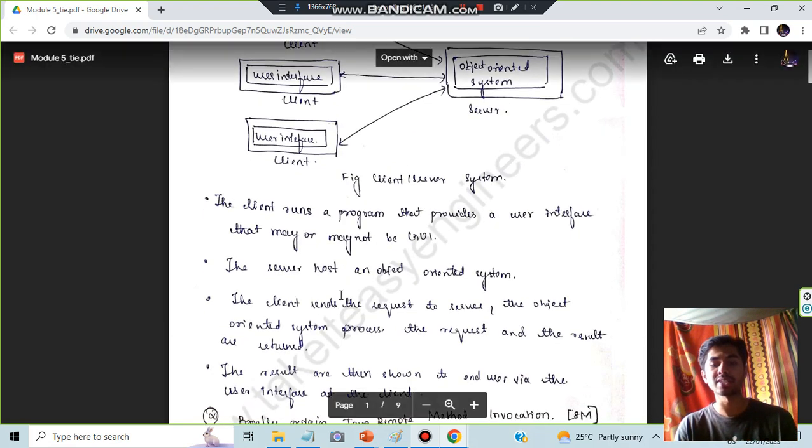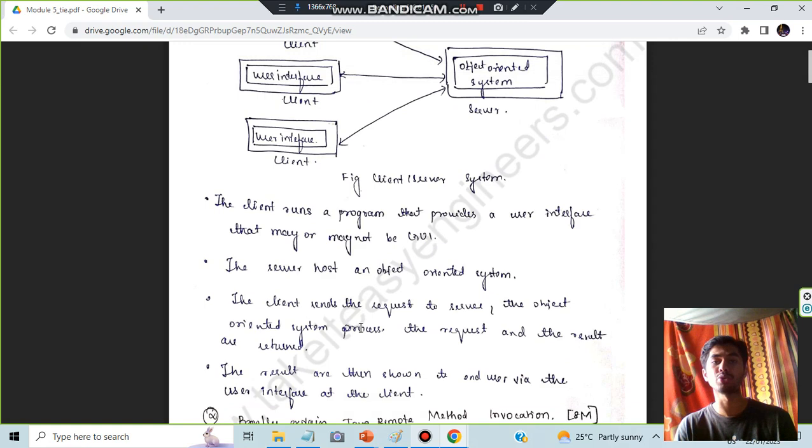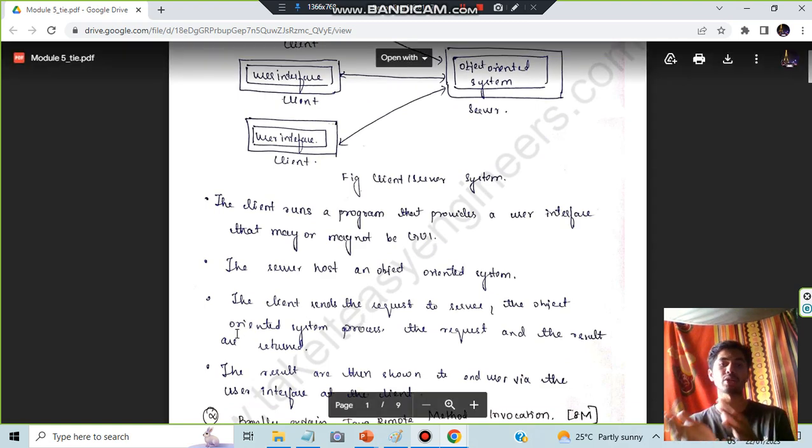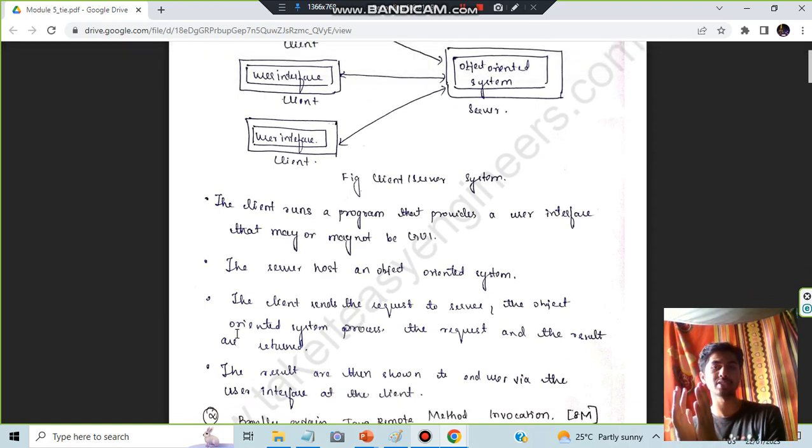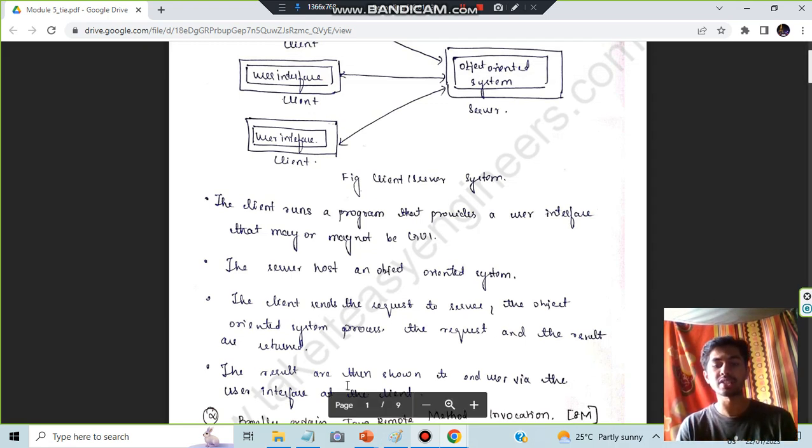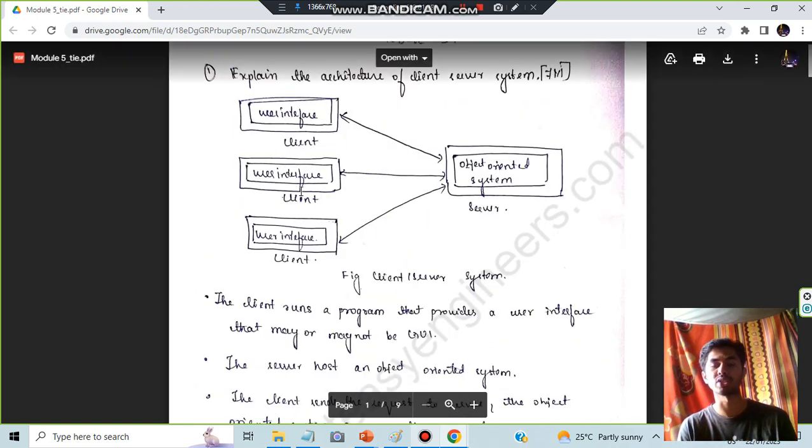The client sends a request to the server, the object-oriented system processes the request and sends the result back to the client. Finally, the results are shown to the end user via the user interface to the client, and the results are shown at the user end in the user interface.